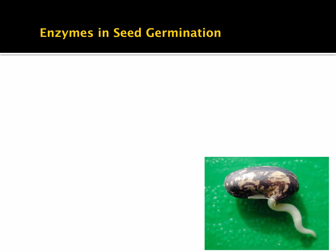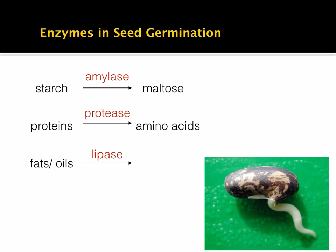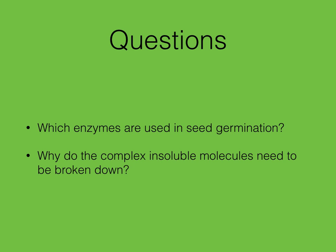To summarize the enzymes involved in seed germination: starch is broken down by amylase into maltose; proteins are broken down by proteases into amino acids; fats and oils are broken down by lipase into fatty acids and glycerol. Review questions: Which enzymes are used in seed germination, and why do the complex insoluble molecules need to be broken down?